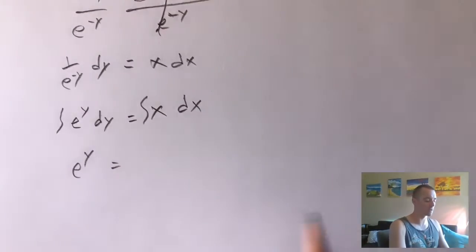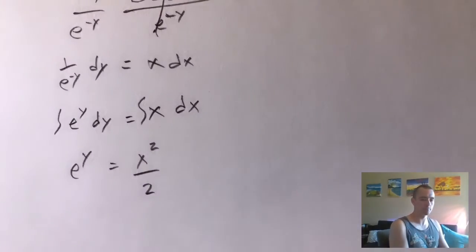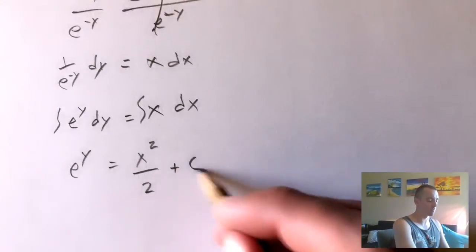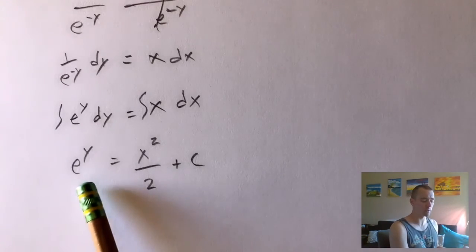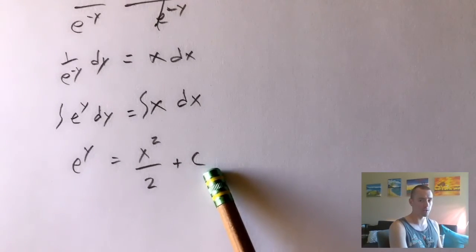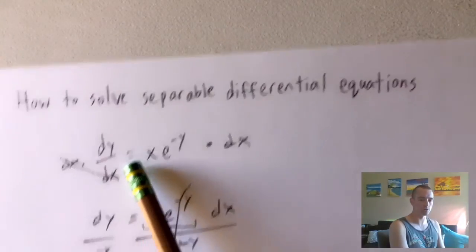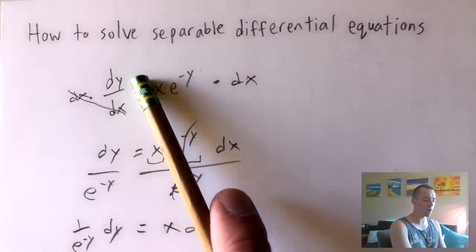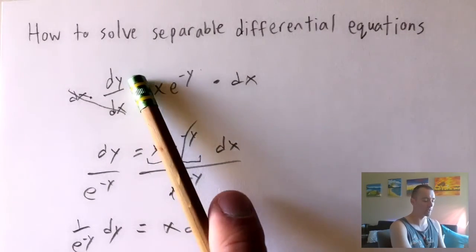On the right side, the integral of x with respect to x — treating x as our variable — we use the power rule: raise the power by one and divide by the new power. That gives us x squared over 2. We also add a plus C. Technically you could put a plus C on both sides when you integrate, but we'll eventually move it to the x side since y is the variable we want to solve for — as indicated by the original equation having y on top.